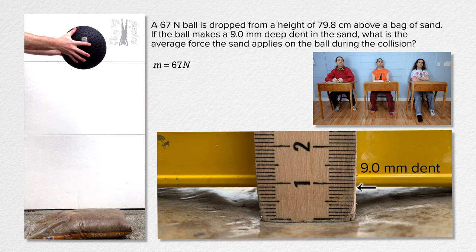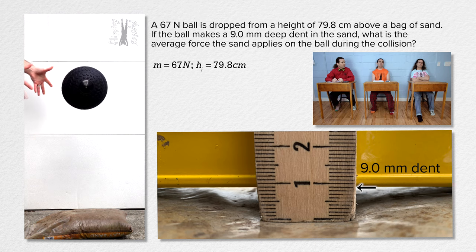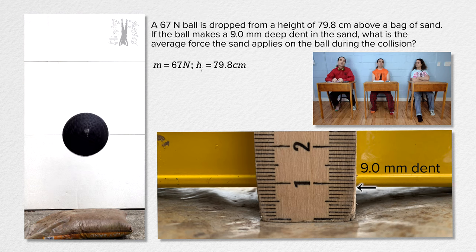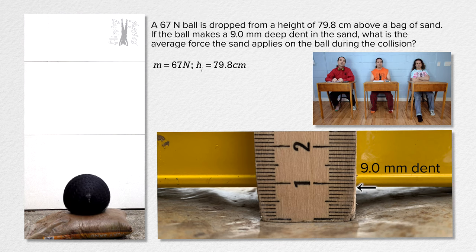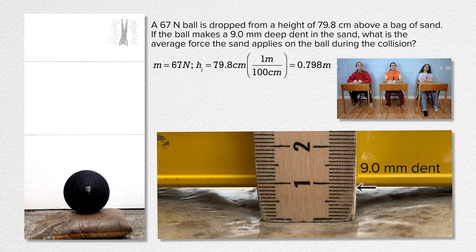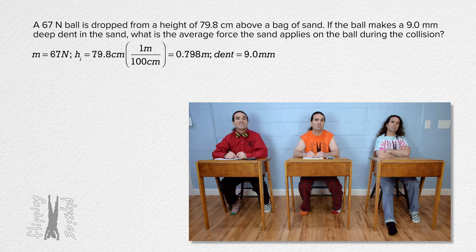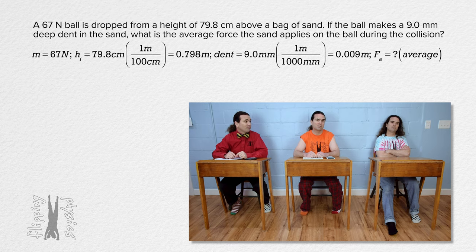Mass equals 67 Newtons. Height initial equals 79.8 centimeters — we should convert that to meters, so multiply by 1 meter over 100 centimeters to get 0.798 meters. The dent depth equals 9.0 millimeters, which we multiply by 1 meter over 1000 millimeters to get 0.009 meters. And the average force applied equals question mark.